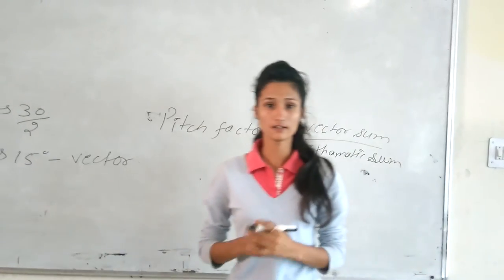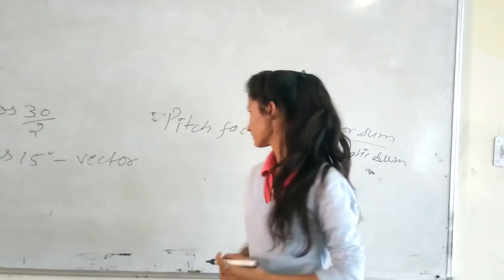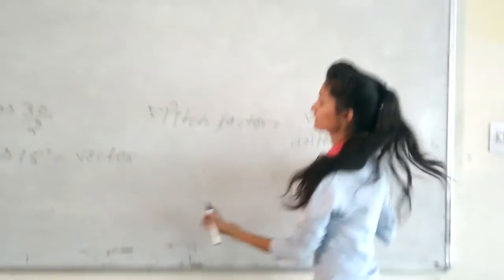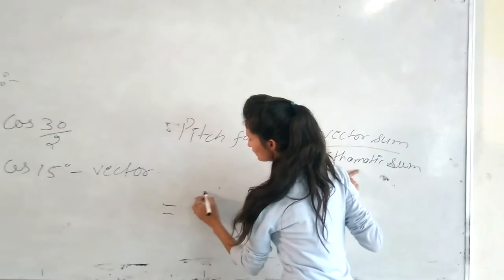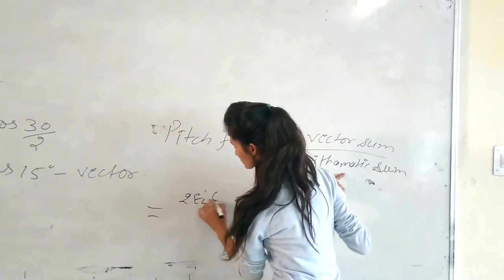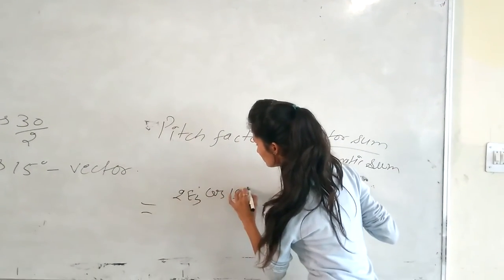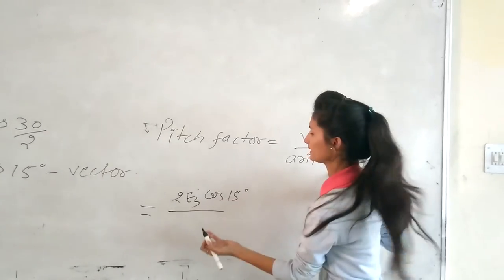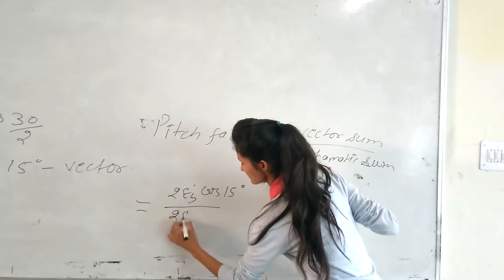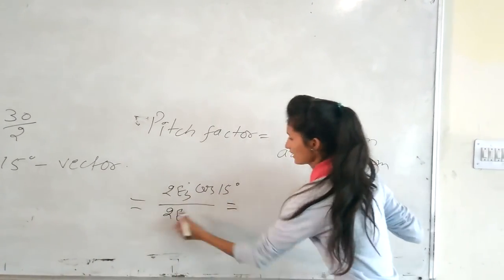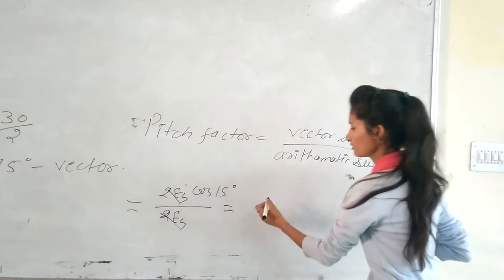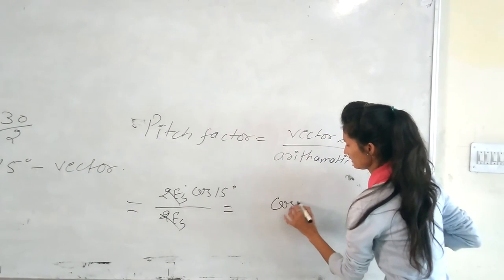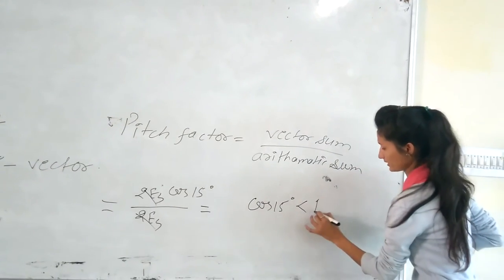Here you can see the vector sum divided by arithmetic sum. This will be 2ES cos 15 degrees divided by arithmetic sum, divided by 2ES. The ES terms cancel out to give cos 15 degrees. This is always less than 1.